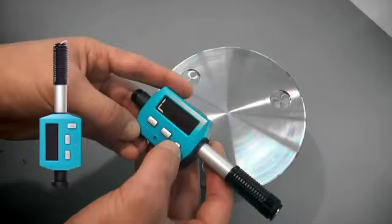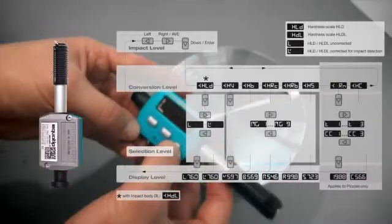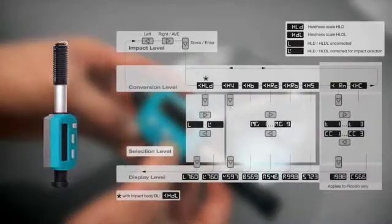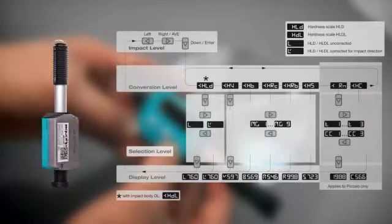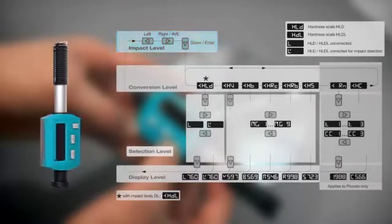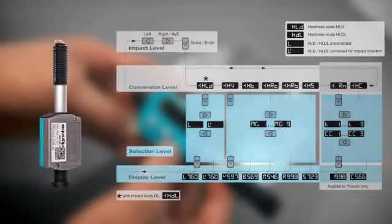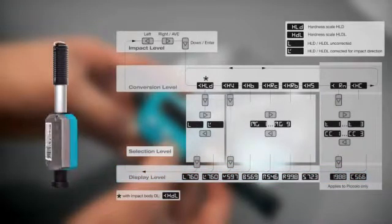To understand how to operate the EchoTip Piccolo, have a look at the following graphic. As you can see, there are four operating levels: the impact, the conversion, the selection, and the display level. To navigate within these different levels, press the respective keys.